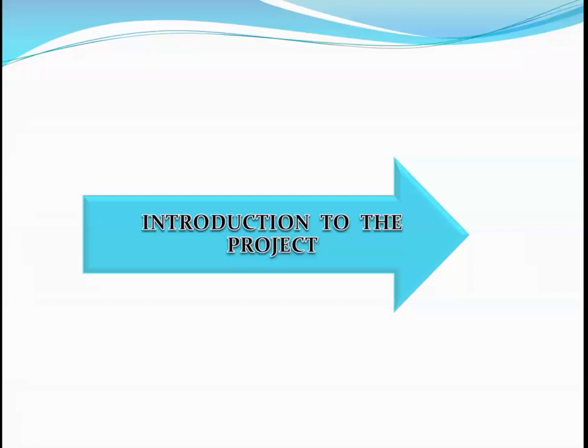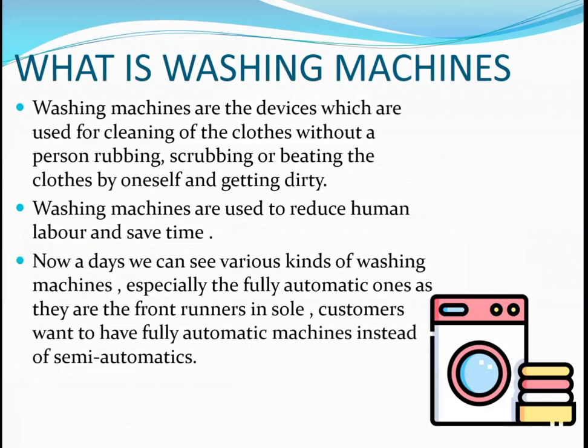Introduction to the project: what are washing machines? Washing machines are devices used for cleaning clothes without the need for rough hand scrubbing or beating by oneself. Washing machines are used to reduce human labor and save time. Nowadays we can see various kinds of washing machines, especially fully automatics, front load, and top load.